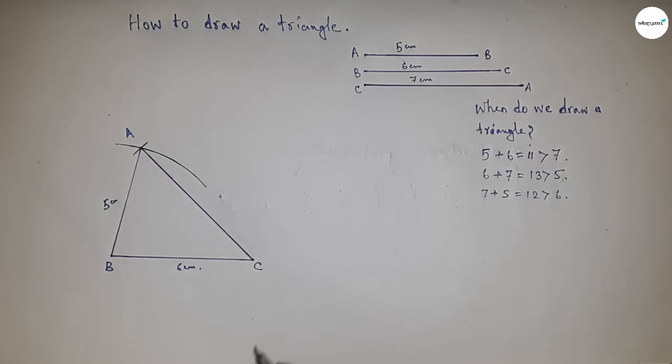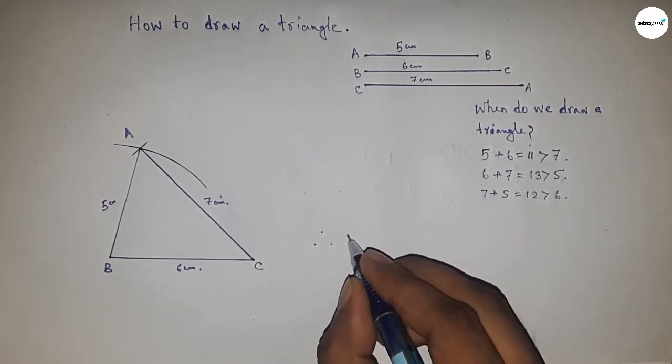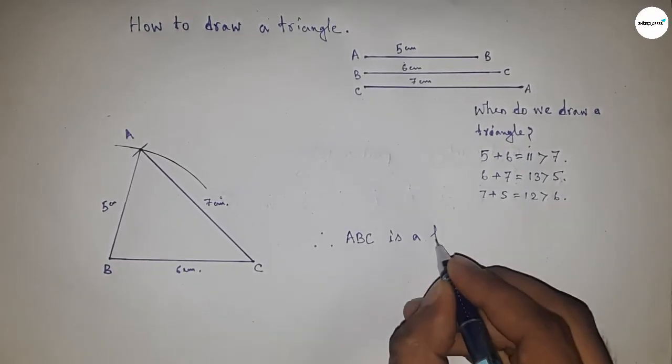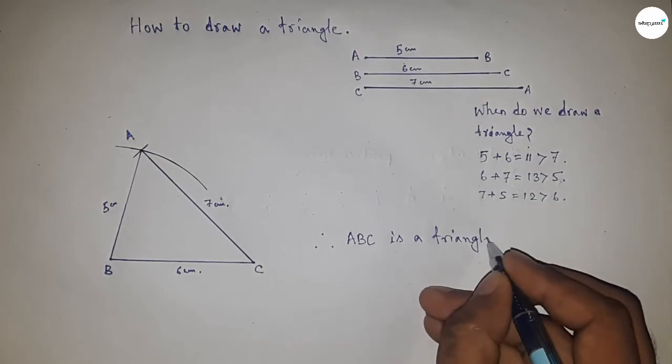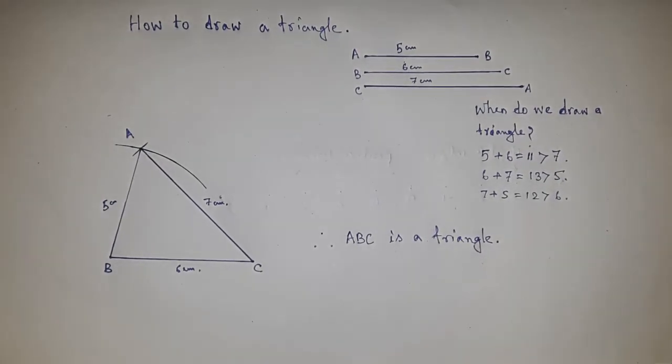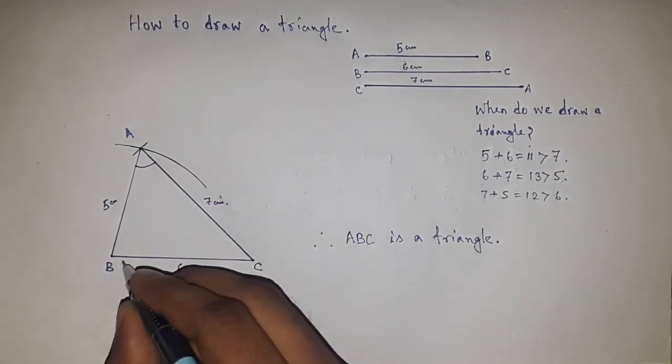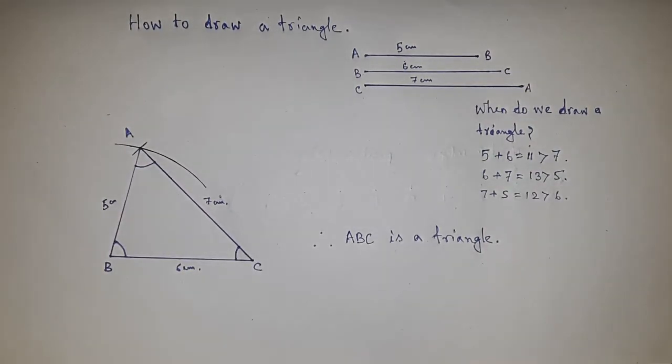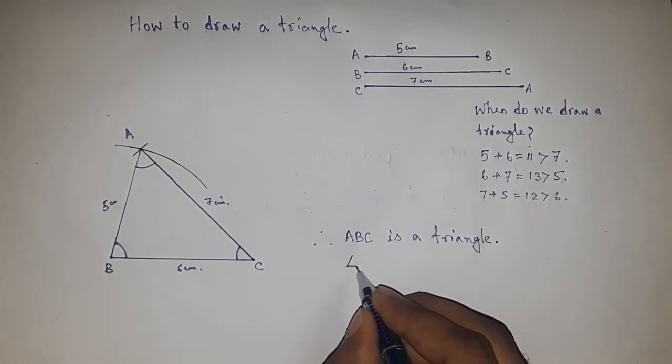So this is 5 centimeters and this is 7 centimeters. We've got triangle ABC. Therefore, ABC is a triangle. A triangle has three angles. The first angle is angle ABC.